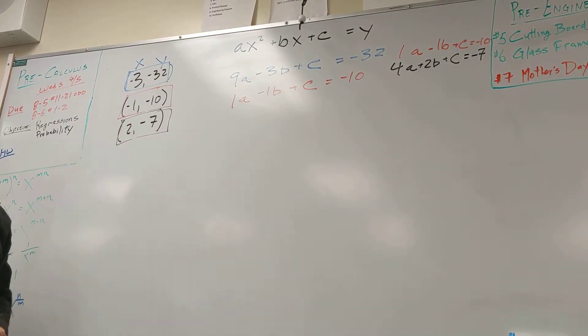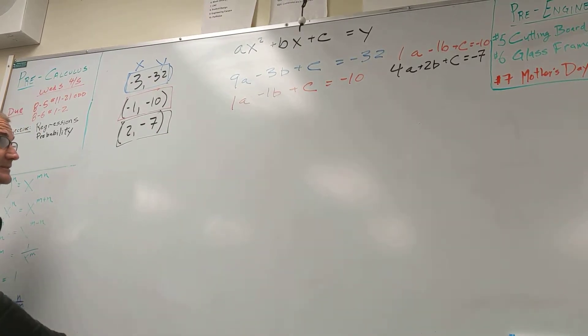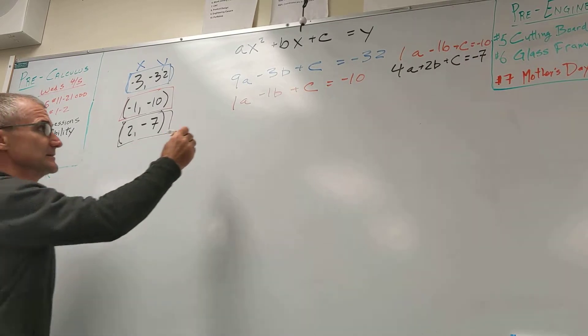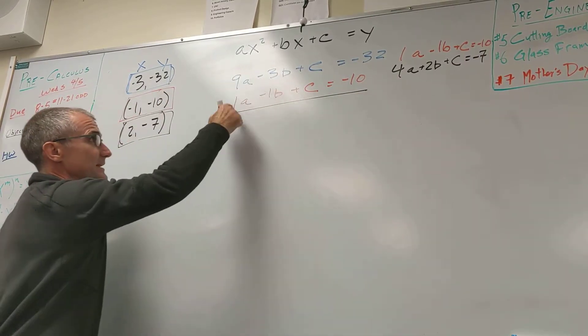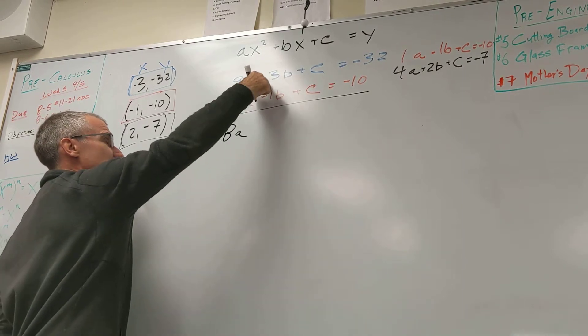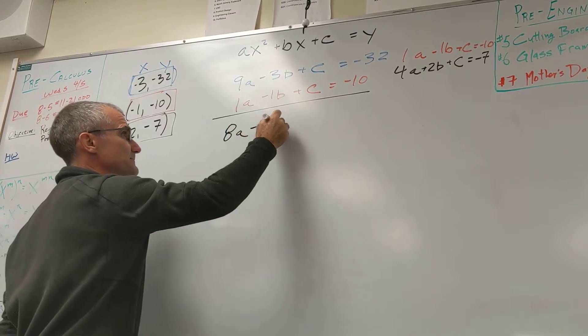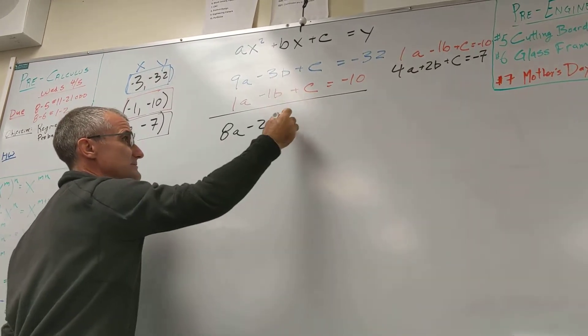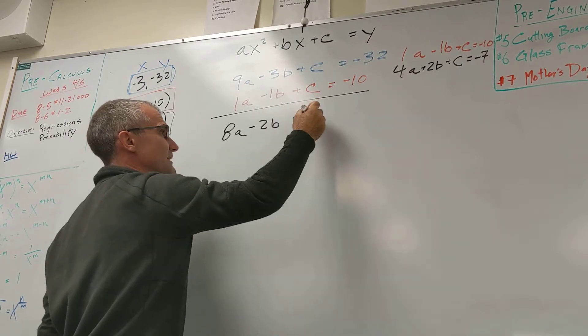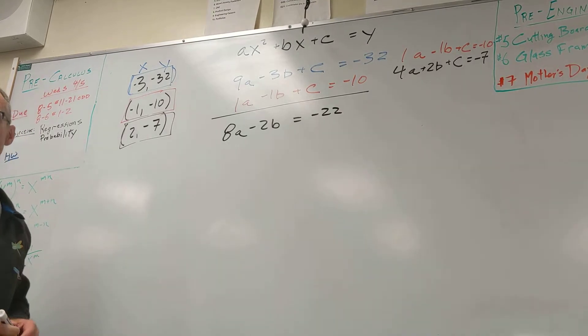So in this case right here, I'm going to do blue minus red. So blue minus red is 9a minus 1a, 8a. Negative 3b minus negative 1b, so that's negative 2b. C minus c will cancel. And then negative 32 minus negative 10 is negative 22. Everybody get together?